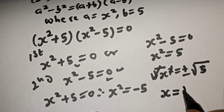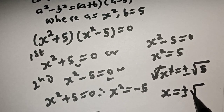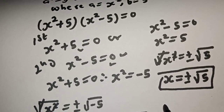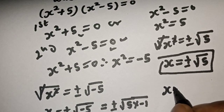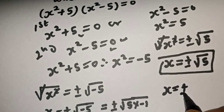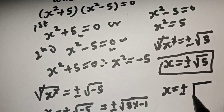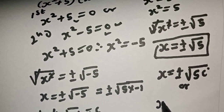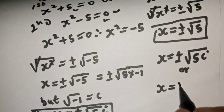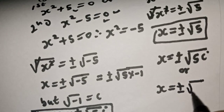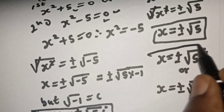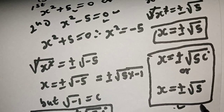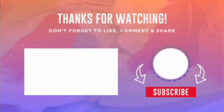s is equal to plus or minus square root of 5. This is the second value of s. Therefore, our final answers are: s is equal to plus or minus square root of 5i, or s is equal to plus or minus square root of 5. These are the values of s. If you enjoyed the class, please don't forget to like, share, comment and subscribe. Thank you.